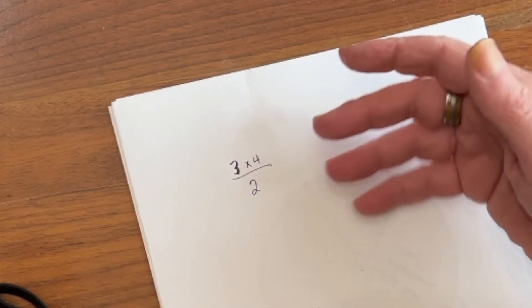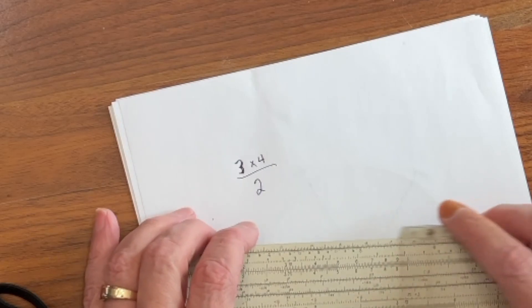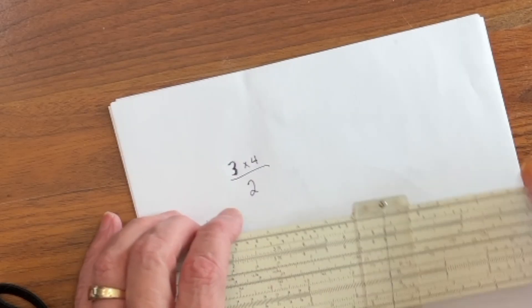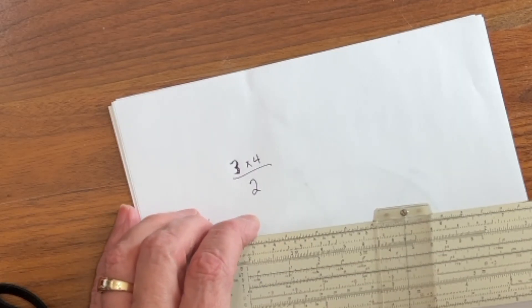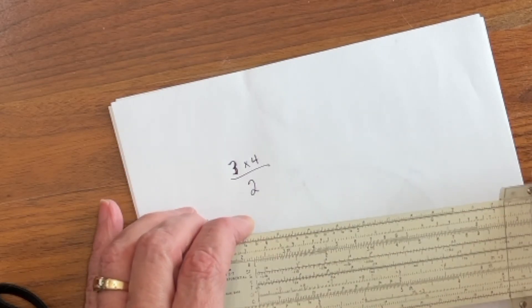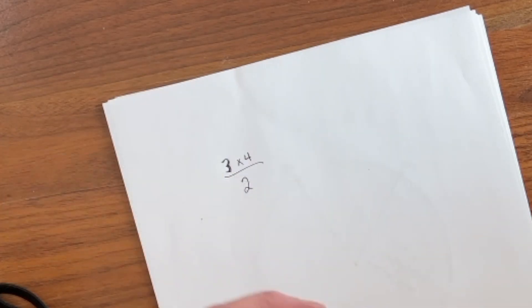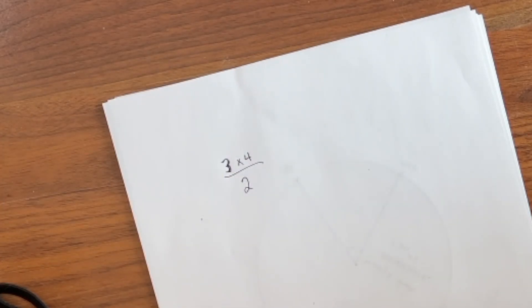Now, so far we've taken simple problems like this, 3 times 4 divided by 2, and we've solved them on the slide rule. The way that we would do that is we would take 3, divide it by 2, and then come out to 4. And we'd find our answer, 6. However, there's another way that we can do this that's a little easier than going through all of the arithmetic.